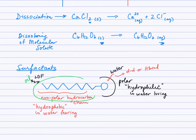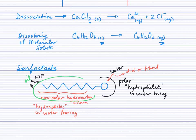If we insert this surfactant into our water — so we make our water soapy — then the polar or hydrophilic end of the surfactant molecule will interact well with the water and break up or disturb the surface tension of the water in such a way that the other end of the detergent molecule will interact with the grease. In doing so, we can essentially lift the oil off of the pan.